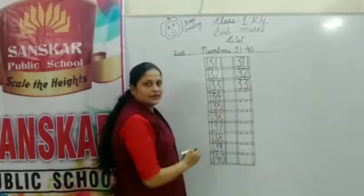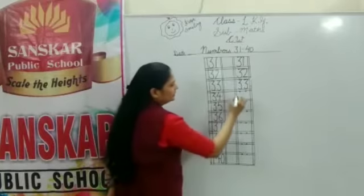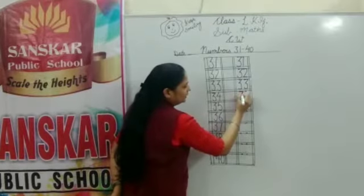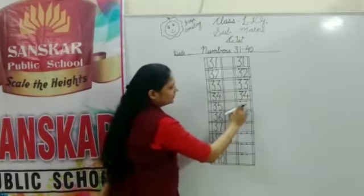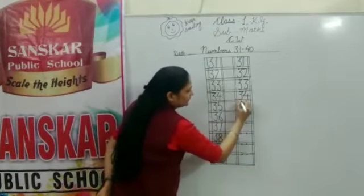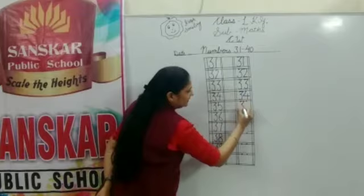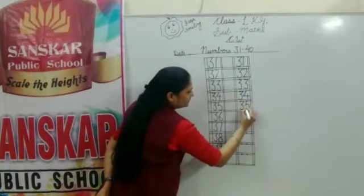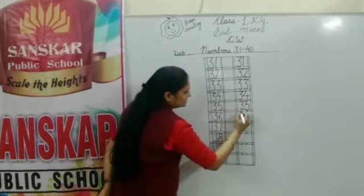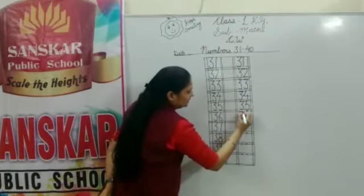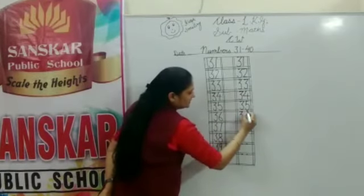And what comes after 33? Write down 3, 4 — 34. After 34, write down 3, 5 — 35. And next, please write down 3, 6 — 36.